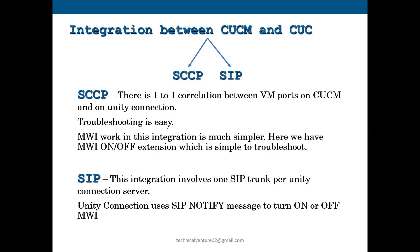In the SIP integration, it involves only one SIP trunk per Unity Connection server. You just need to create one SIP trunk from CUCM to Unity, and then all calls will go through that SIP trunk only — not through ports like in SCCP, where it takes different ports. In SIP, it goes through only the one SIP trunk you created.